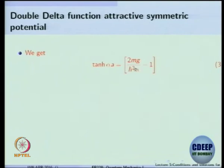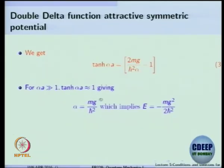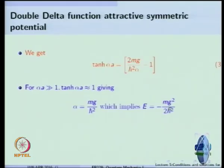Looking at equation 3, there exists an energy if it satisfies this equation. Let us look for the trend. The first trend is alpha times a is very much greater than 1, which means tanh in that limit can be approximated to 1. From there you can determine that the energy has to be minus mg squared divided by this g — do not confuse it, this g is the coupling which was in front of your V of x. So this g squared tells you that the energy is proportional to g squared.